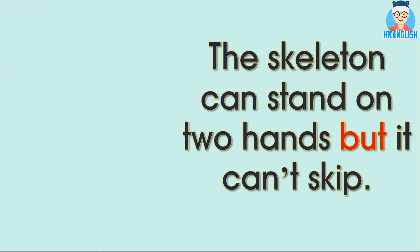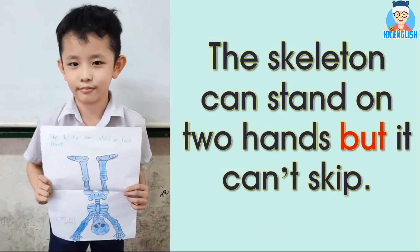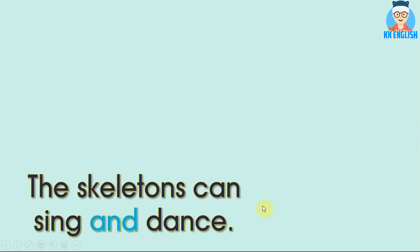The skeleton can stand on two hands, but it can't skip. 这个描述可以写说你的骨架可以做些什么，但是他不能够做些什么。这样会帮助你的描述更加精彩哦。The skeleton can't sing and dance — 为什么有s呢？